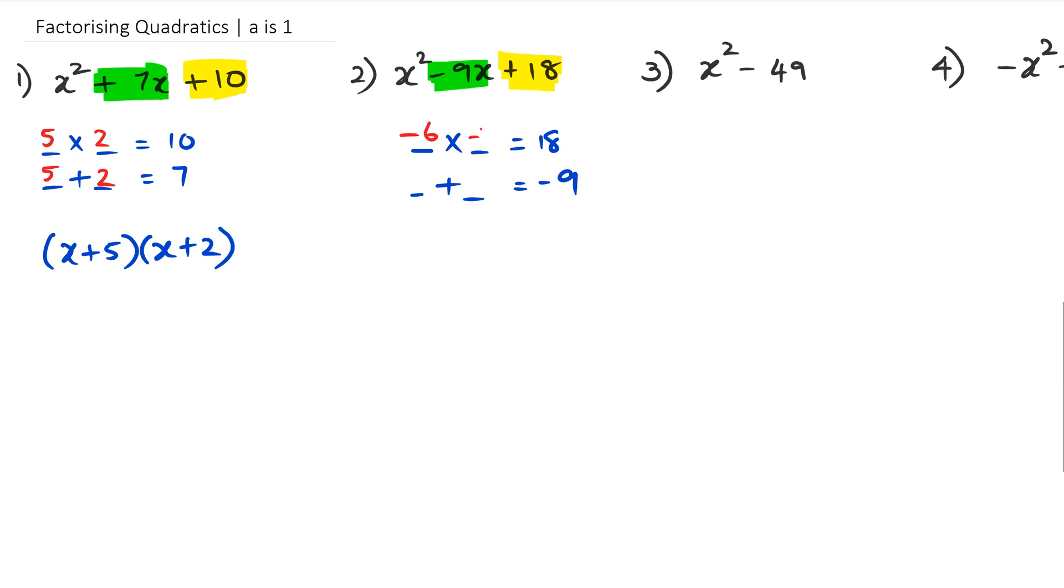In this case we can see that it's going to be negative 6 and negative 3, and negative 6 plus negative 3 equals minus 9. So when we factorize that top line we're going to end up with (x-6)(x-3). Now guys, it doesn't matter which number you put in first. For example, some of you might have actually done it like (x-3)(x-6).